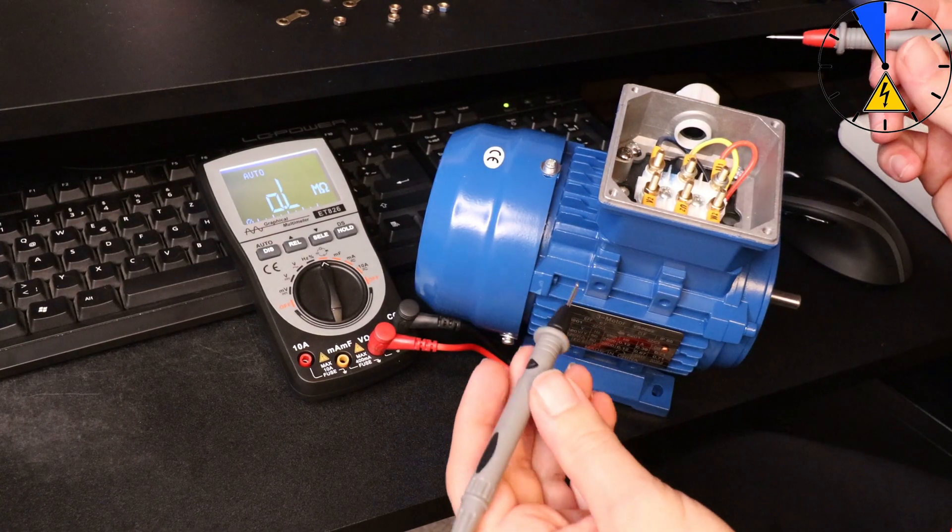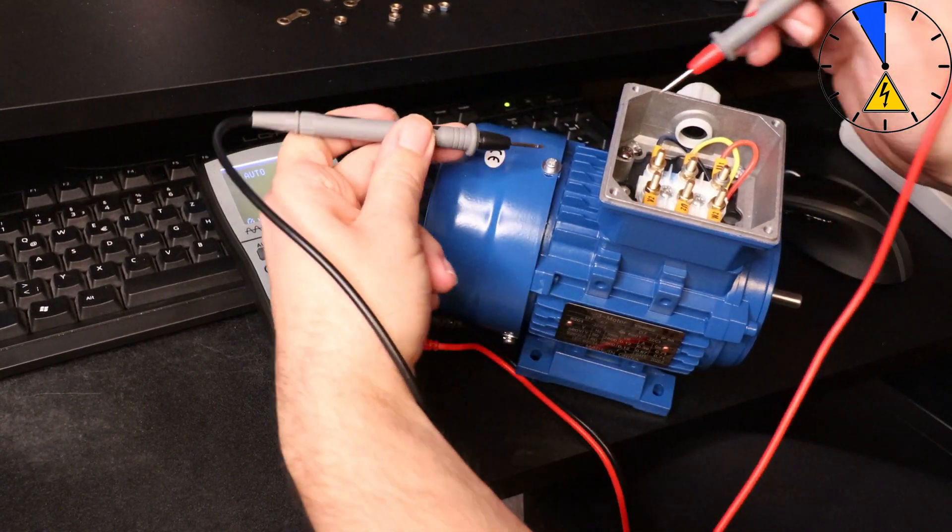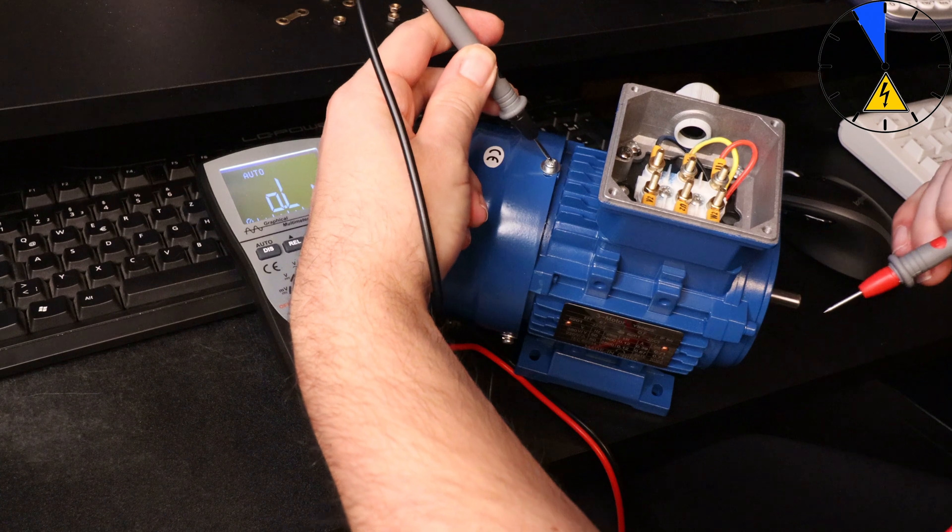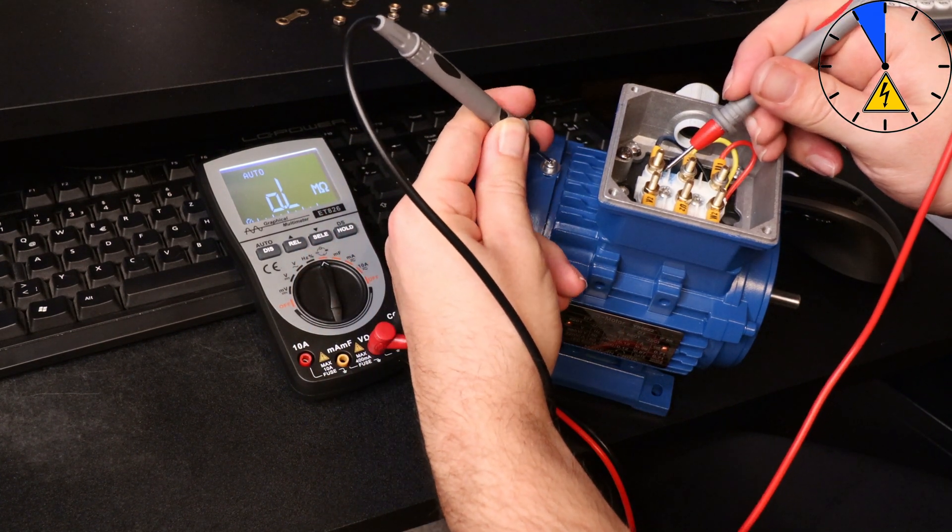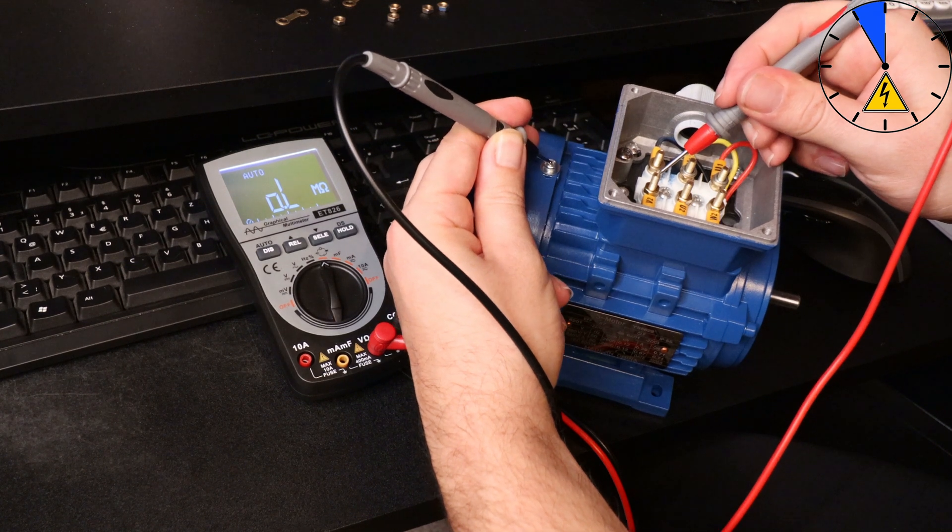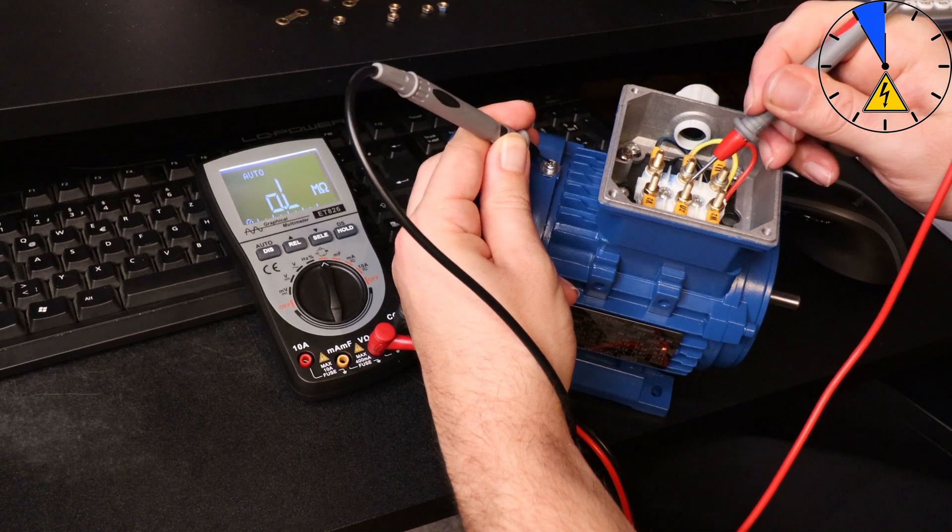The first test is the ground test. The ground test is between the body, for example here the screw of this body, and this connection of the motor coil, and the resistance must be infinitive.